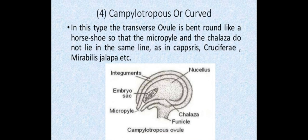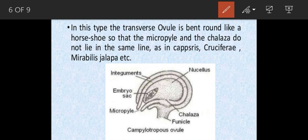The fourth type is campylotropous, or curved ovule, sometimes also called angular ovule. The micropylar end is bent towards the funicle — it is just curved toward it. The shape of the ovule is horseshoe-shaped. It is common in Cruciferae, Mirabilis, Jalapa, etc.